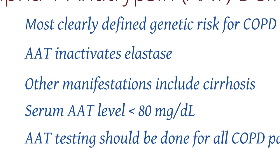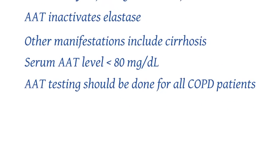Other manifestations of alpha-1 antitrypsin deficiency include cirrhosis of the liver. We can diagnose alpha-1 antitrypsin deficiency by testing AAT levels. If they are less than 80, then you have a diagnosis of alpha-1 antitrypsin deficiency and should then get a genotype to identify the severity of the deficiency. Note, alpha-1 antitrypsin deficiency testing should be done for all COPD patients, but especially in patients who are young that have developed signs of COPD.